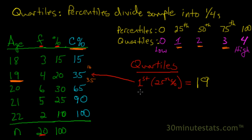We could do another example here. We'll look for the second quartile, in which case we're looking for the 50th percentile. Here we can see that the second category, age 19, goes up to 35% of the distribution.